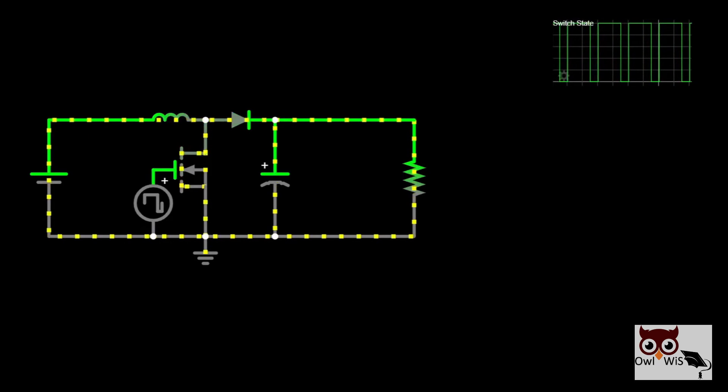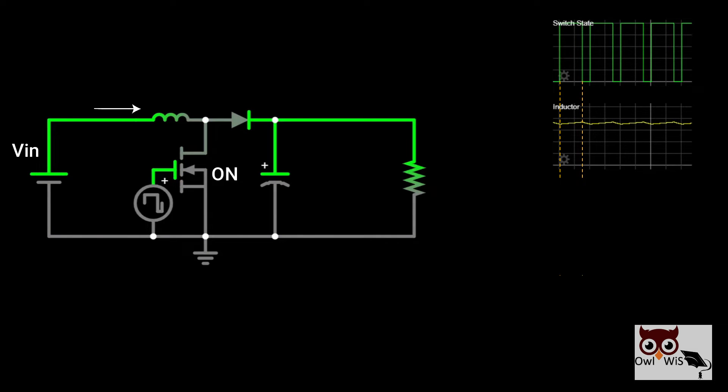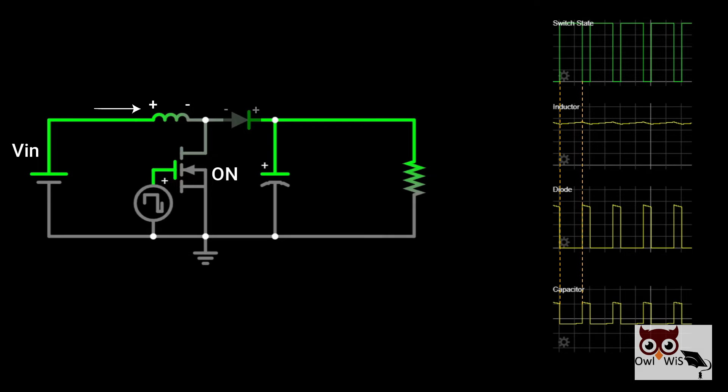When the transistor switch is closed (on state), current flows through the inductor and stores energy in its magnetic field. Diode is reverse biased, blocking current flow.